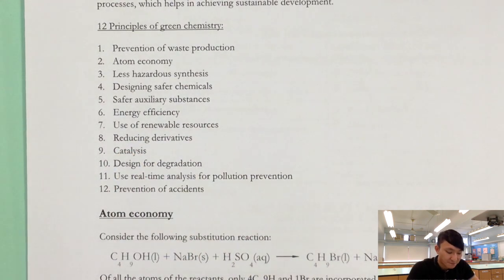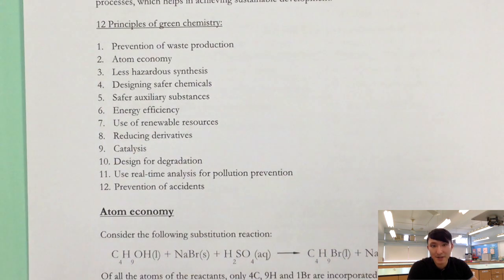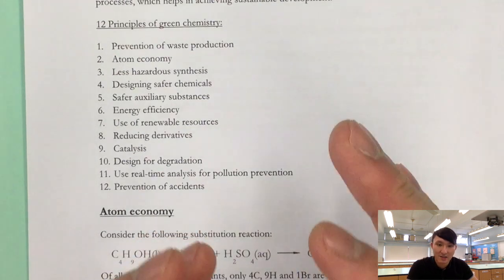Now number eight, reducing derivatives. What is a derivative? Let's say we have a chemical reaction involving a reactant with more than one functional group and what we want is to change one of the two functional groups only. To achieve that we will add a derivative compound to protect one of the functional groups while leaving another functional group to react. So this derivative can protect the functional group, preventing it from undergoing any unwanted reactions.